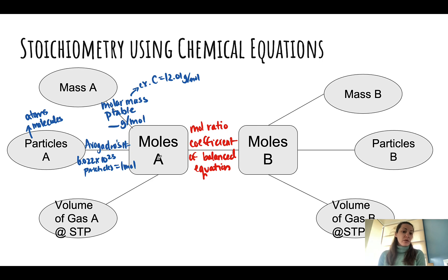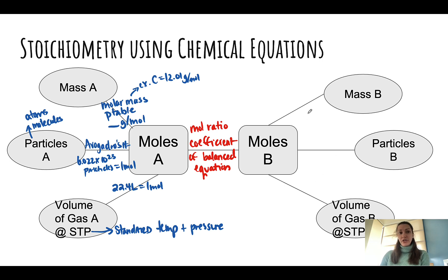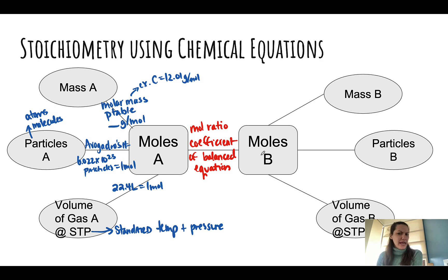Our last relationship is going to be between moles of a substance and the volume of gas of that substance at STP. STP means standard temperature and pressure. It works for every gas at these conditions of standard temperature and pressure. That tells us that it's 22.4 liters of space in one mole of any gas at standard temperature and pressure. So now if you're given information about the mass of a reactant, you can figure out how many moles it has, then use the balanced equation to get moles of a different substance, and from there get information about the mass, number of particles, or volume of gas of that new substance.